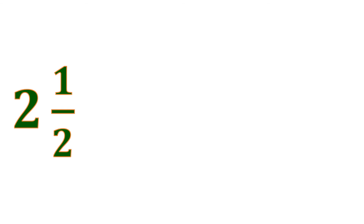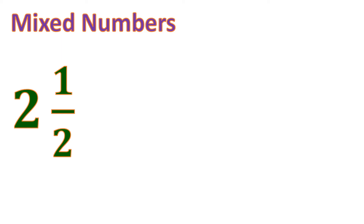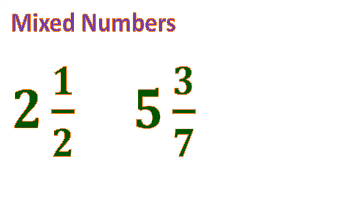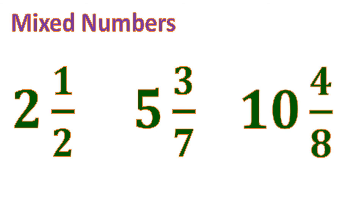Another fraction: two and one-half. This kind of fraction is what you call a mixed number, or sometimes a mixed fraction — it's just the same. It's usually called a mixed number because it contains a fraction and a whole number. So it's two wholes and one-half — a combination of a proper fraction and a whole number. Another example is five and three-sevenths.